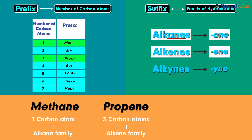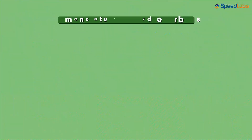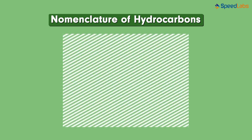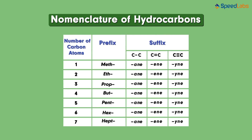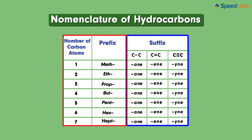Now let's try it the other way around. For 'butyne,' 'but' means it has four carbon atoms, and '-yne' indicates it belongs to the family of alkynes — having at least one triple covalent bond. That's how hydrocarbons are named. A reference table lists various hydrocarbons named based on their number of carbon atoms and the family to which they belong.